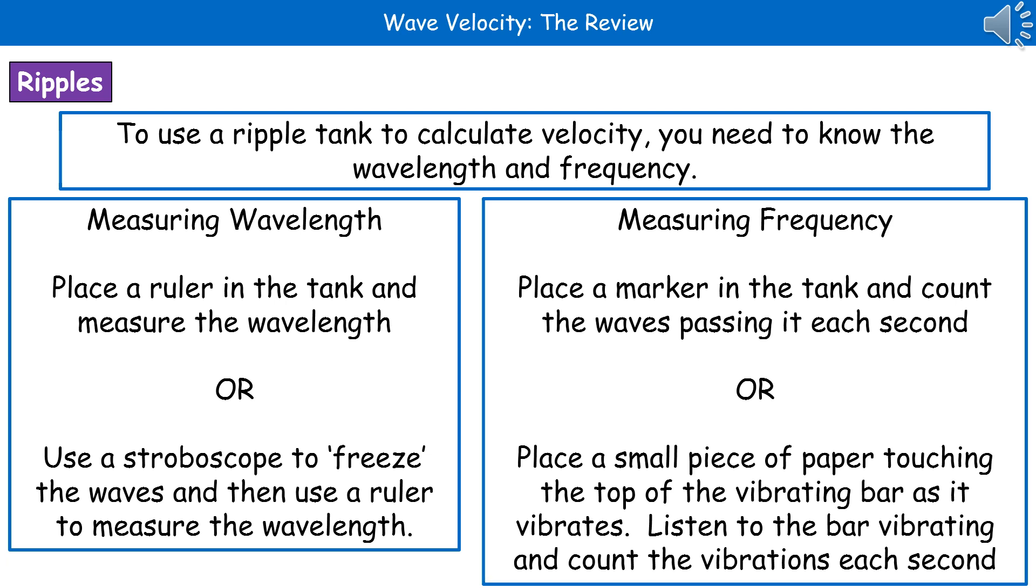In our ripple tank, if we want to measure the wavelength, we can do this one of two ways. First way, you can submerge a ruler into your ripple tank and as the ripples are passing, you can measure it just by looking through. Obviously, potential inaccuracies there as the waves are moving, so it might be quite hard to judge.